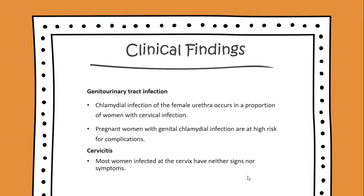Pregnant women with genital chlamydia infections are at high risk for complications. Cervicitis is one such complication, where most women are infected at the cervix and have neither signs nor symptoms.